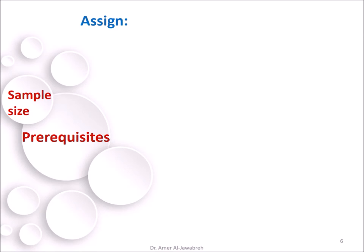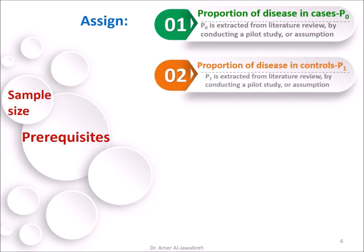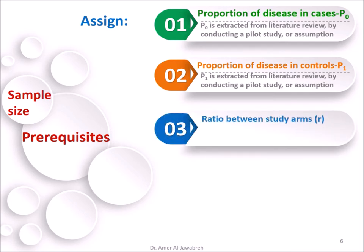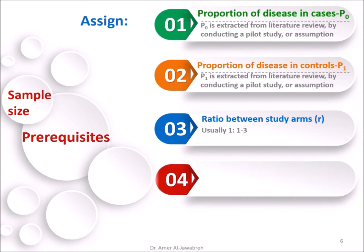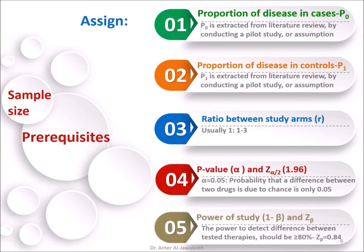Sample Size Pre-Requisites — assign five variables: 1) Proportion of disease in cases, P0. 2) Proportion of disease in controls, P1 — both assigned based on literature review. 3) Ratio between study arms R, which is the ratio between cases and controls. 4) Assign P-value and Zeta Alpha over 2, which is usually 1.96. And 5) Assign power of study and Zeta Beta, which is commonly 0.84.